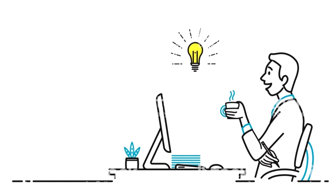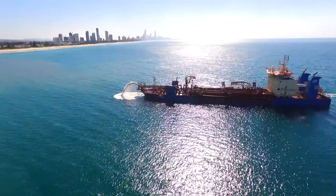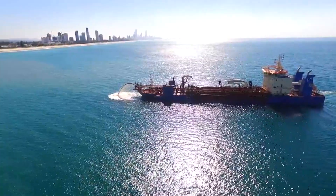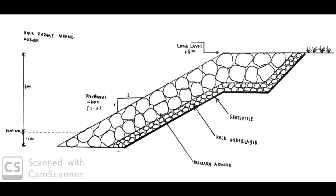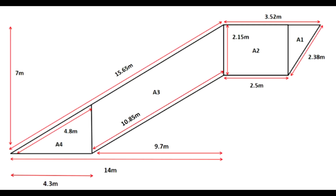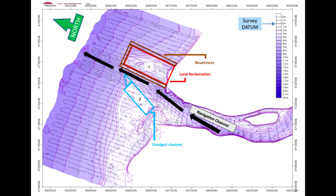To solve this erosion and deposition problem, we propose building a revetment and carrying out a dredging process. Dredging is the removal of sediment from the bottom of the river to increase the depth of the navigation channel. A revetment is a passive structure that protects against erosion caused by wave action, storms, and currents. From our calculations, we can determine the suitable position to place the revetment and undergo dredging.